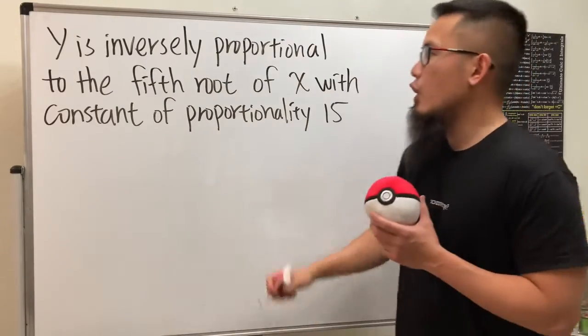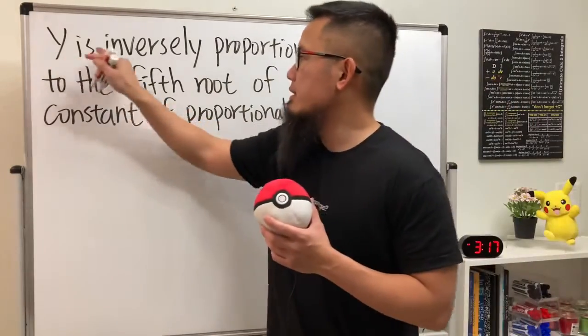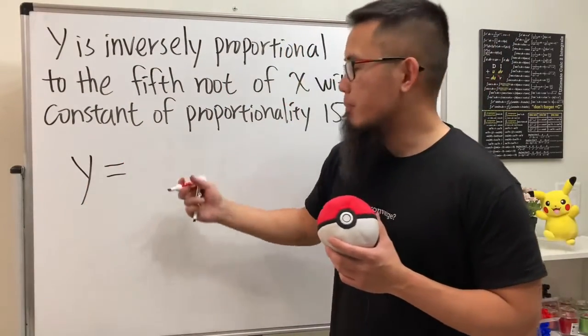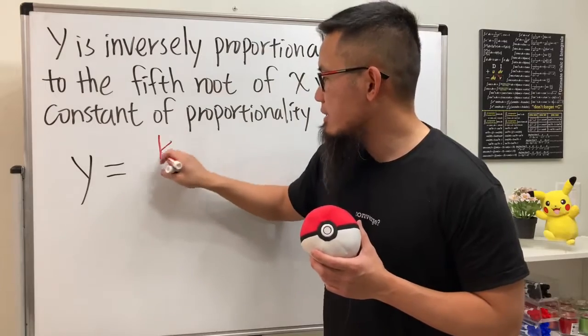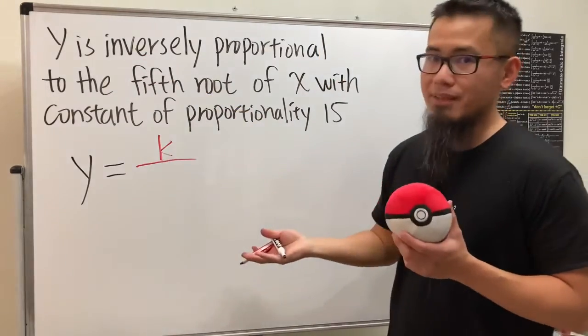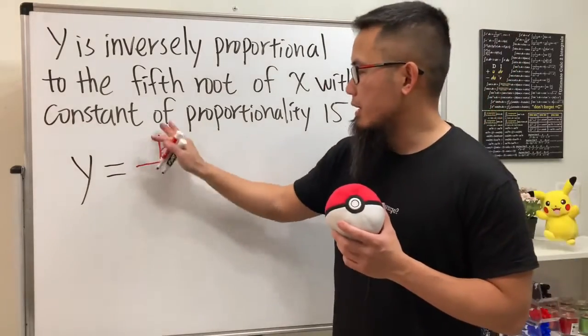So check this out. Whenever we are saying y is inversely proportional, go ahead and just do the following: y is equal to some number k. And because it says inversely, we will be dividing instead of multiplying, right? So it's going to be k divided by...